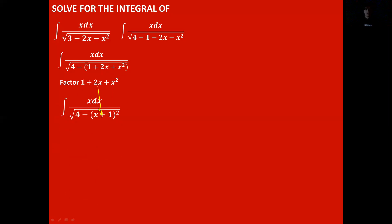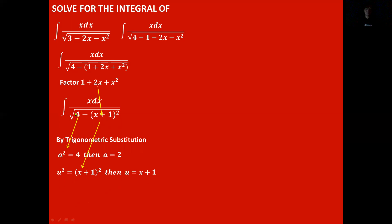By trigonometric substitution, we identify a squared equals 4, so a equals 2. And u squared equals x plus 1 squared, so u equals x plus 1. We let u equal a sin theta, and substituting gives us x plus 1 equals 2 sin theta.